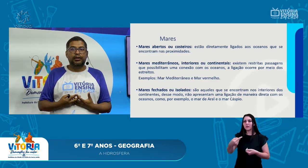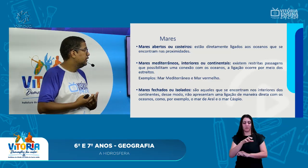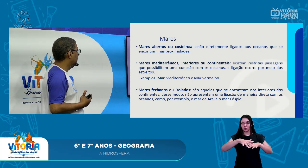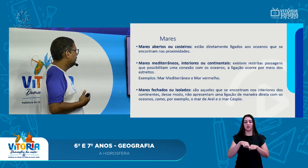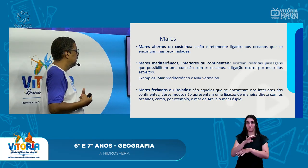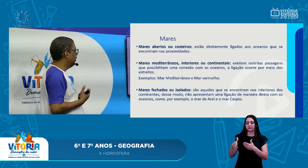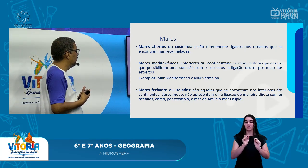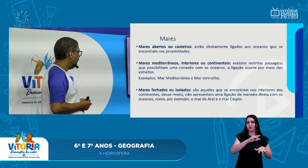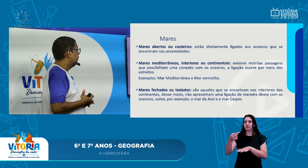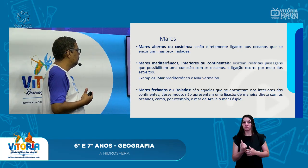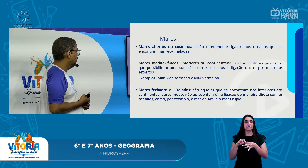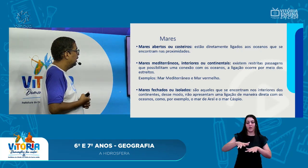Depois dos oceanos, nós temos os mares, que se dividem em três tipos. Os mares abertos ou costeiros, que estão diretamente ligados aos oceanos nas proximidades. Os mares mediterrâneos, interiores ou continentais, que têm restritas passagens que possibilitam a conexão com os oceanos por meio de estreitos — exemplo: o mar Mediterrâneo e o mar Vermelho. E os mares fechados ou isolados, que se encontram no interior dos continentes e não têm ligação direta com os oceanos, como o mar de Aral e o mar Cáspio.